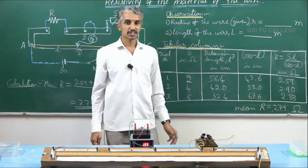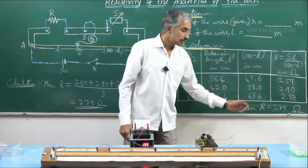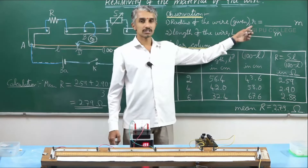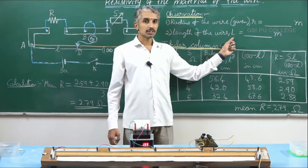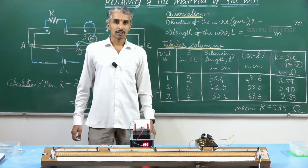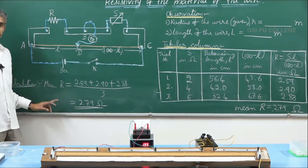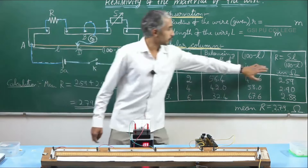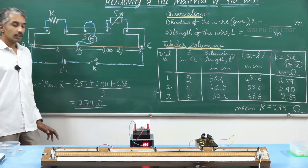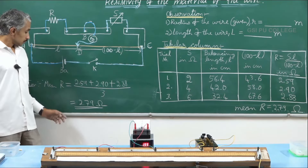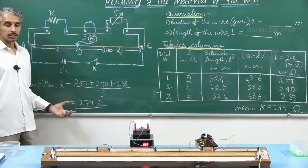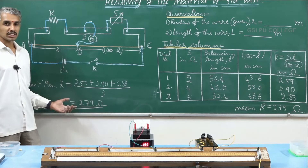The major part of the experiment is done. Now we are left with calculating resistivity. The calculations for resistance using the formula must be written in your examinations as well as your record books, as calculations carry marks. Make sure to include all the calculations you have done in your practical record books.